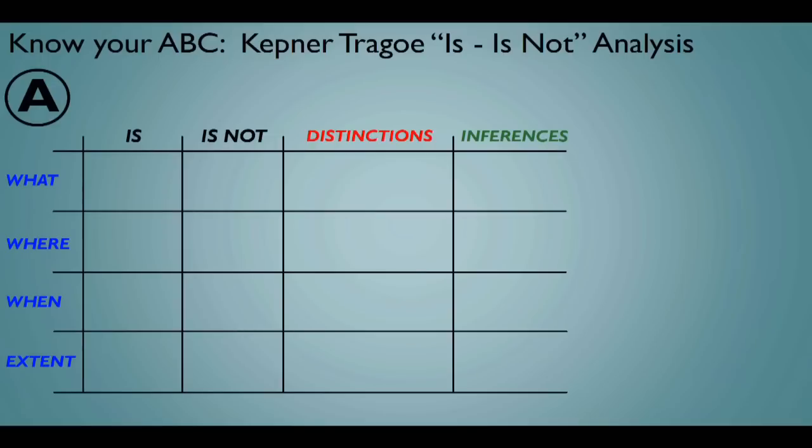You look at what is the problem and what is not the problem. An example might be: if you have cardiac stents and models A, B, and C have worked well, but model D happens to have a lot of issues, then the problem is model D and is not models A, B, C. The distinctions in design are the things to focus on. This doesn't mean you'll immediately find the root cause, but it will point you towards the right factors to investigate.